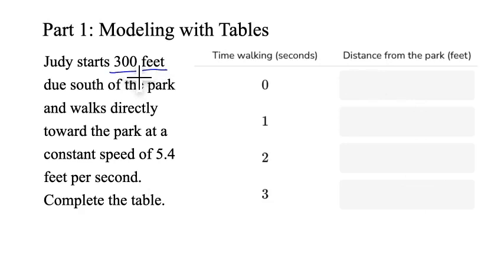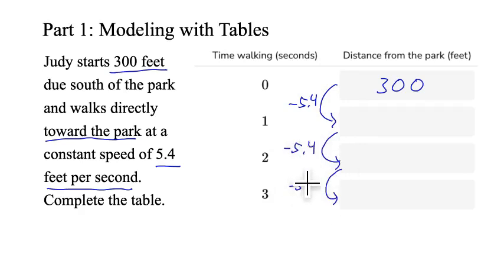We're told that Judy starts 300 feet from the park. So after zero seconds of walking, she will be 300 feet from the park. Every second, she walks 5.4 feet per second toward the park. She's getting closer, so this distance is going to get smaller. With each second, we're going to subtract 5.4. 300 minus 5.4 is 294.6. We subtract 5.4 again and get 289.2, and subtract it one more time to get 283.8.